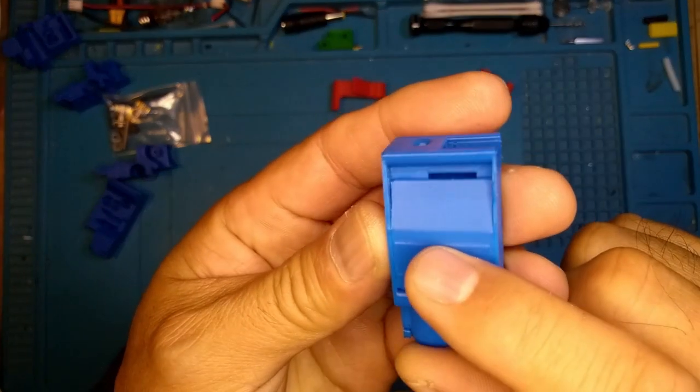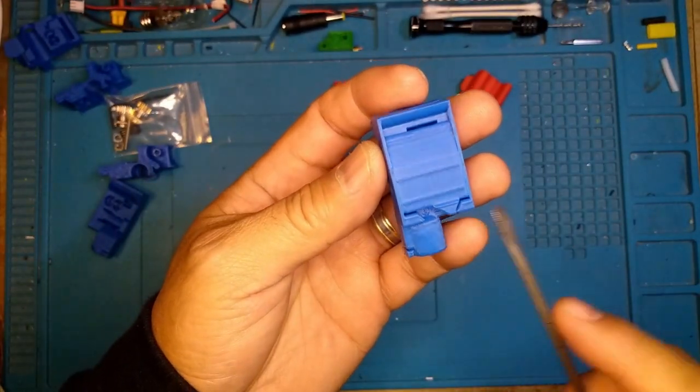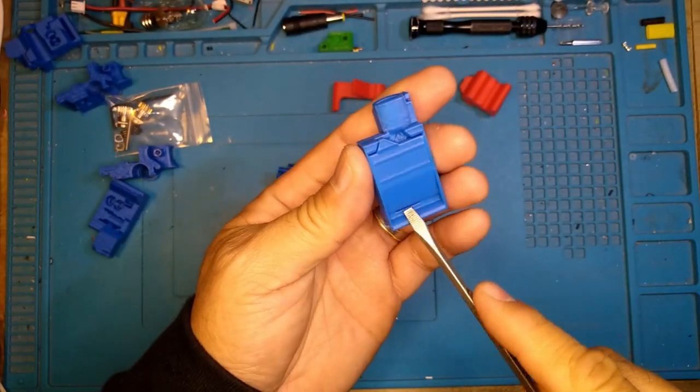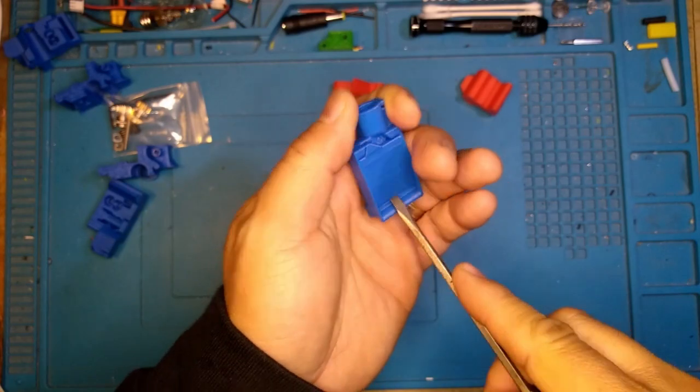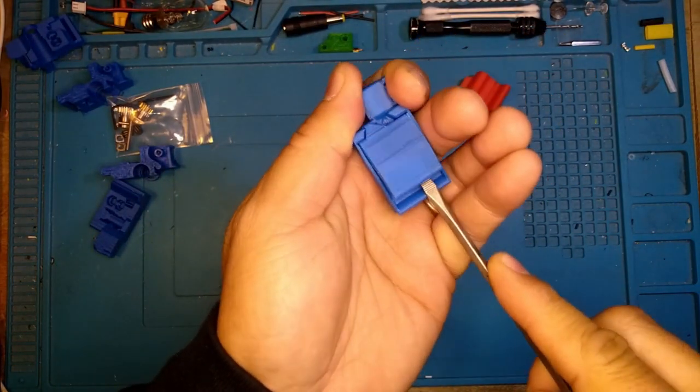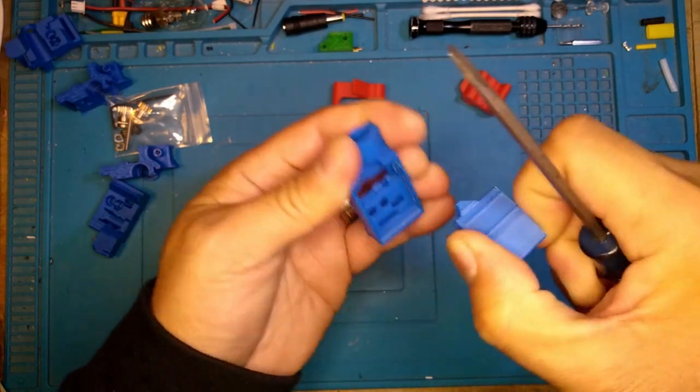This top part needs to be removed. You can just get a screwdriver and pry up. There's a little spot right there you can see it. It should come out pretty cleanly if your printer is tuned well. You lift it out.